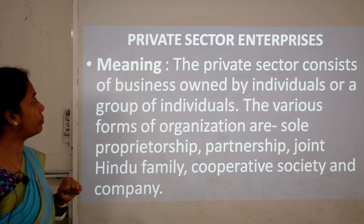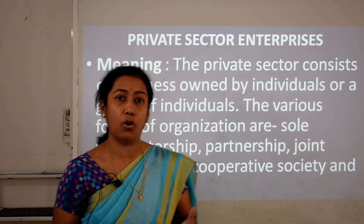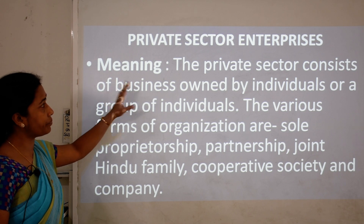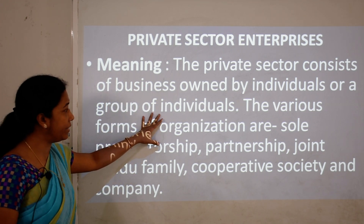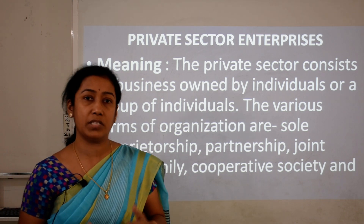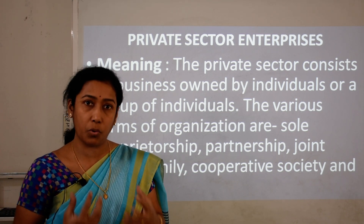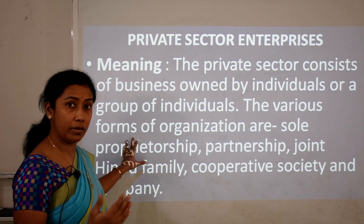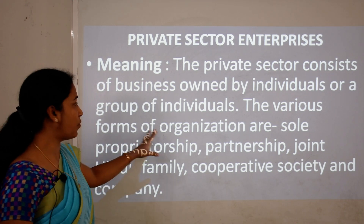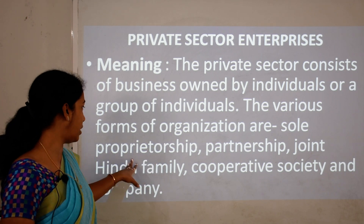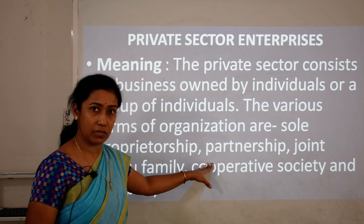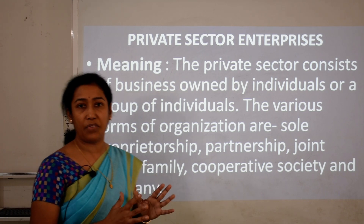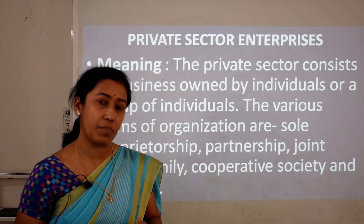Starting with the first topic — private sector enterprises. The whole chapter deals with two things: private and public sector enterprises. The private sector consists of businesses owned by an individual or a group of individuals — managed and controlled by one or more private individuals. Forms include sole proprietorship, partnership, joint Hindu family business, cooperative societies, and joint stock companies.